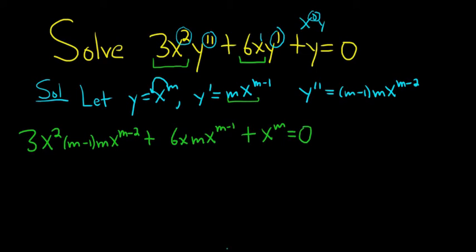So when you get to this step, it's always the same. What you can do is you can combine these powers of x. So you have x squared times x to the m minus 2. You can add the exponents. 2 plus m minus 2 is m. So we get 3m minus 1, m, and then x to the m.